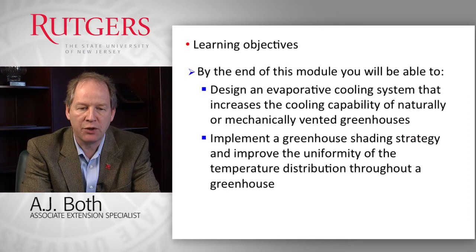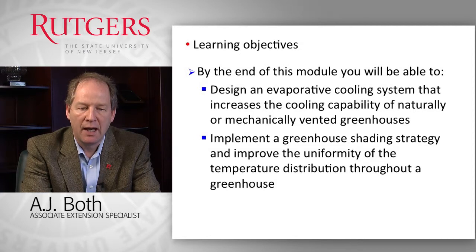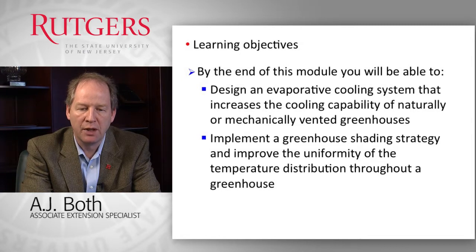The learning objectives for this module are that by the end of this module you should be able to design an evaporative cooling system that increases the cooling capacity of naturally and mechanically ventilated greenhouses, and that you should be able to implement a greenhouse shading strategy and improve the uniformity of the temperature distribution throughout a greenhouse.